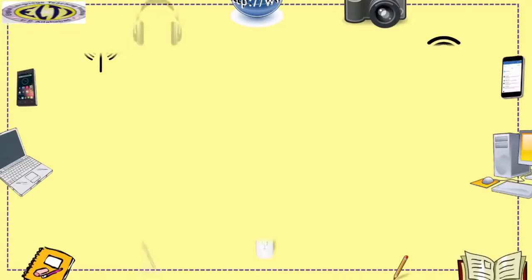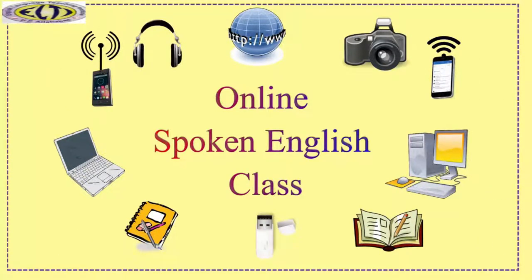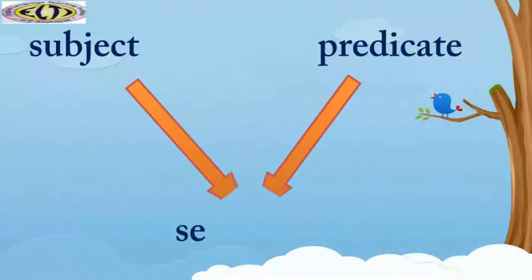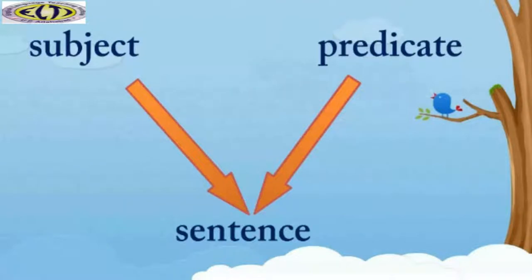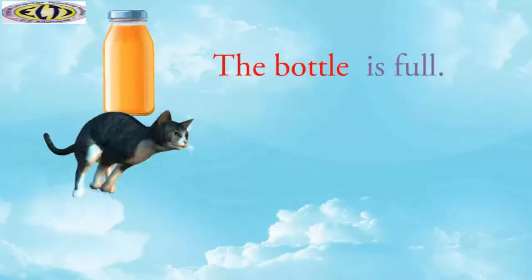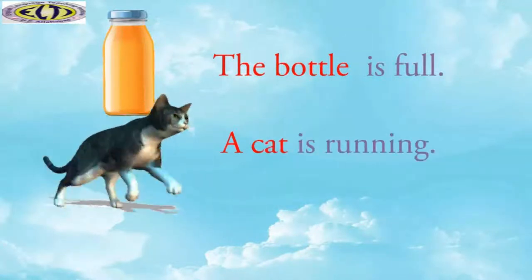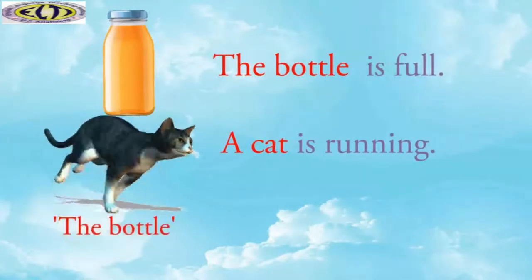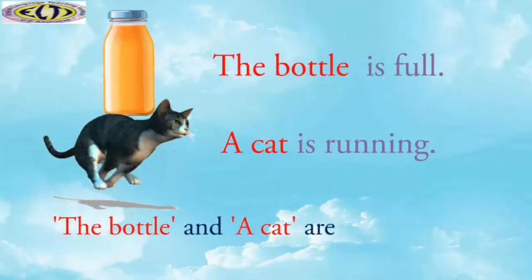Hello everyone and welcome back to Online Spoken English class. We know that subject and predicate are the two parts of a sentence. The subject is what we are talking about. Look at these sentences: 'The bottle is full.' 'A cat is running.' In these sentences, the bottle and a cat are the subjects.